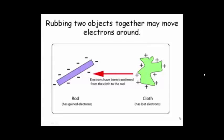So here we have an example of rubbing two objects together. We have maybe a cotton or wool cloth. We're going to rub it onto a rod. And what you see is we have a transfer of, not protons, but electrons.